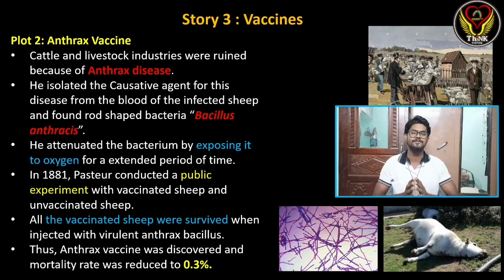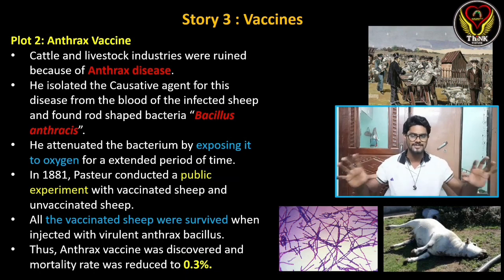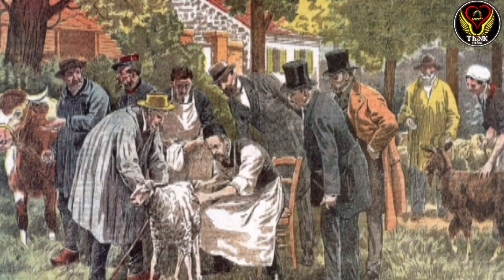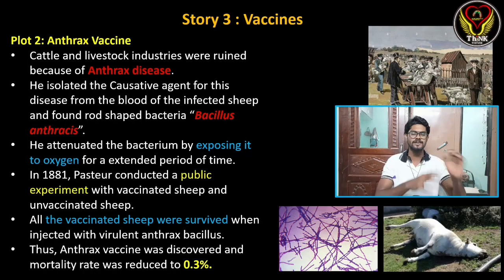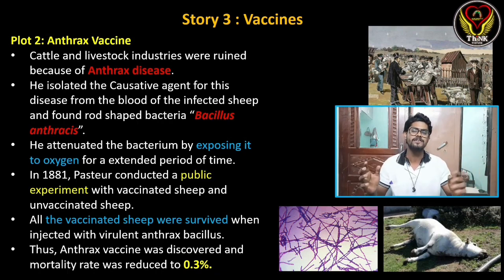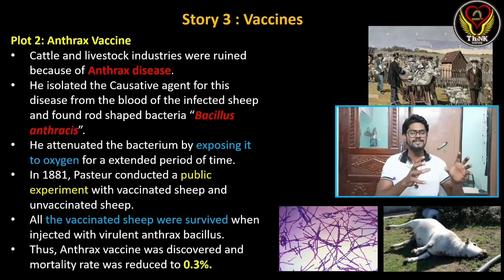Pasteur conducted a famous public experiment. In 1881, there was a public experiment with 100 cattle and 500 sheep. With 50 sheep, the vaccine was given, and then the anthrax disease was introduced. The 50 vaccinated sheep were healthy, while the unvaccinated ones were not.